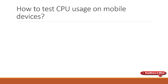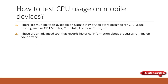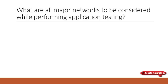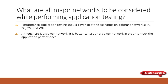How do you test CPU usage on a mobile device? There are applications available to monitor CPU usage, such as CPU Monitor, CPU Stats, and CPU-Z. What are the major networks to consider while performing application testing? You should consider 2G, 3G, 4G, 5G, and Wi-Fi. Even though 2G is slow, you must ensure the application is stable on 2G as well.